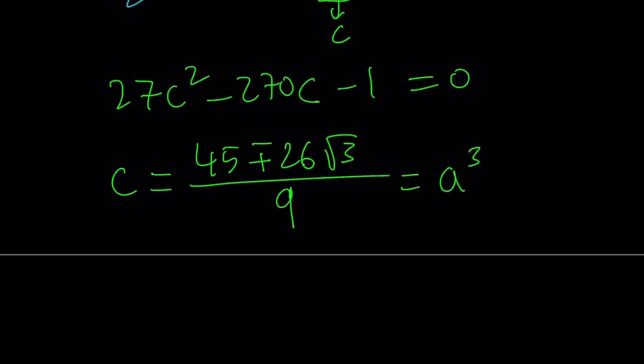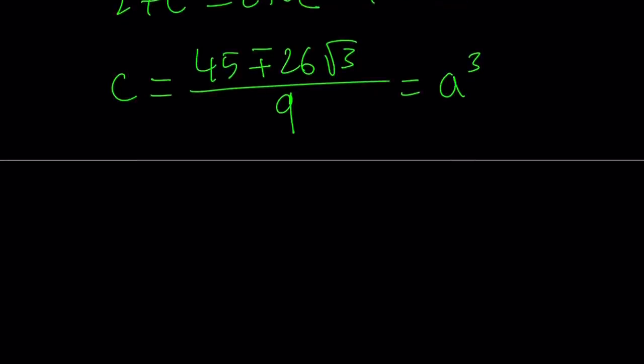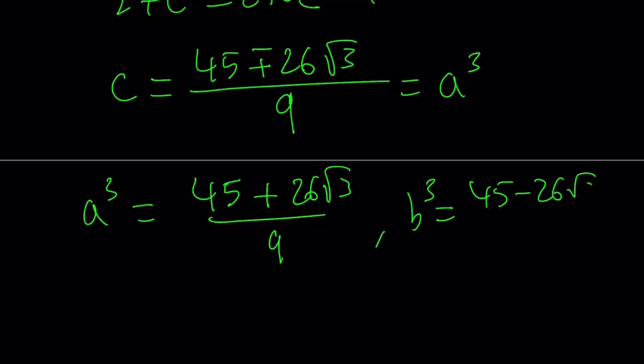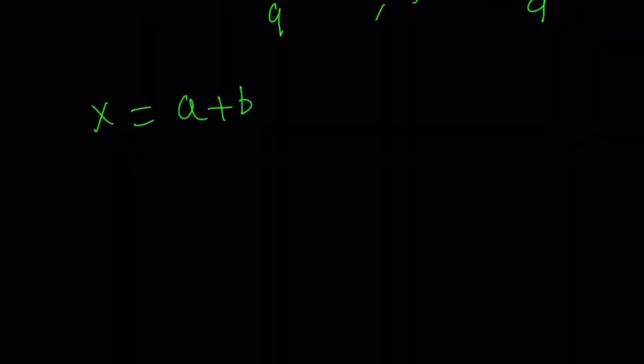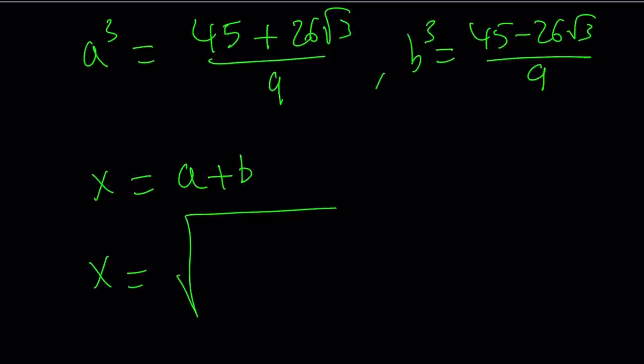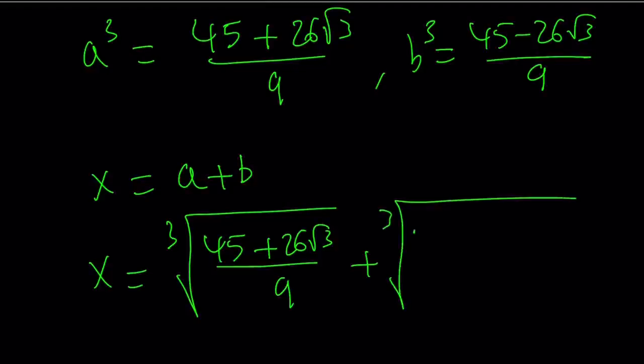And this should equal a³. But which one? Let's go with the positive. Doesn't matter because a and b are interchangeable. Suppose a³ = (45 + 26√3)/9. This indicates b³ is equal to its conjugate. Like this. Or you can switch them around. Doesn't really matter. From here, we can take cube roots and find the values of a and b. And remember, x = a + b in the cubic formula. So x becomes the cube root of (45 + 26√3)/9 plus the cube root of (45 - 26√3)/9.